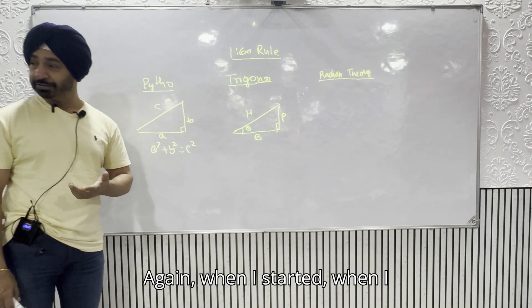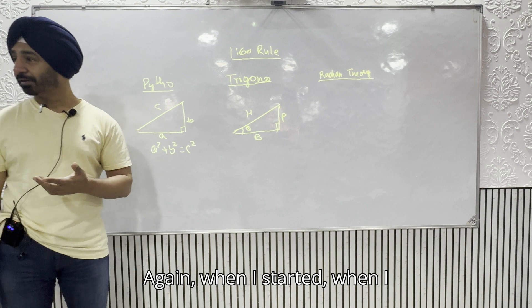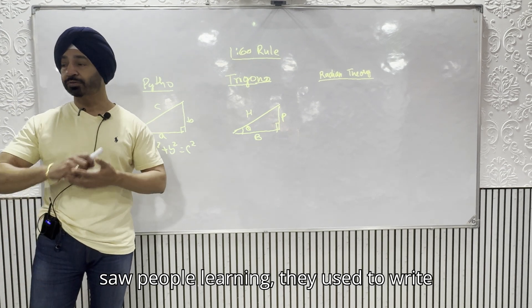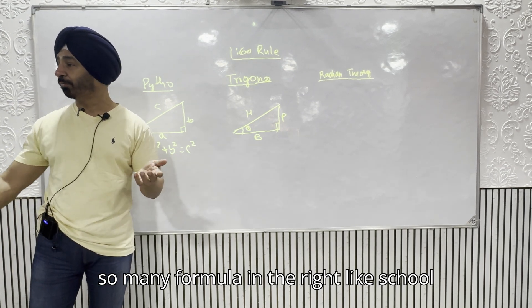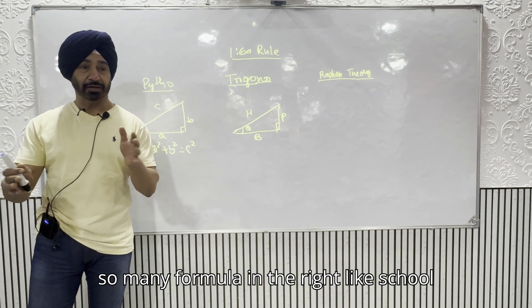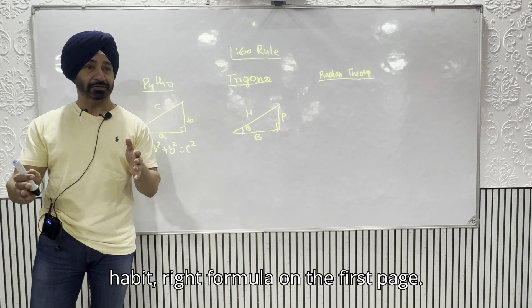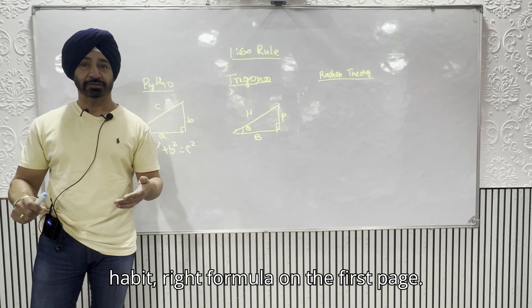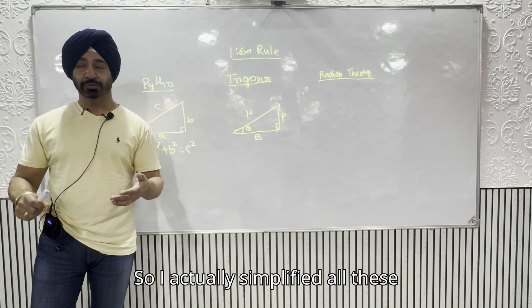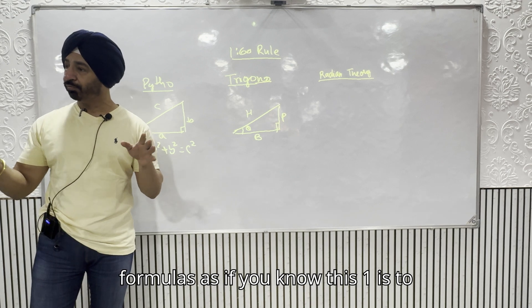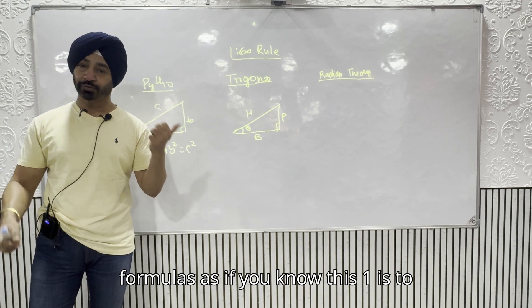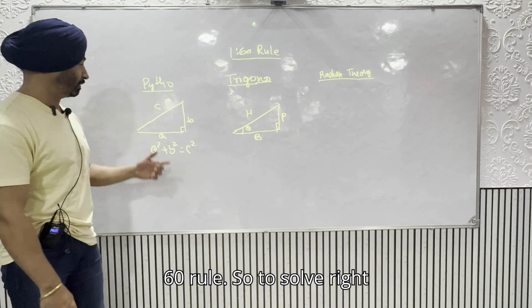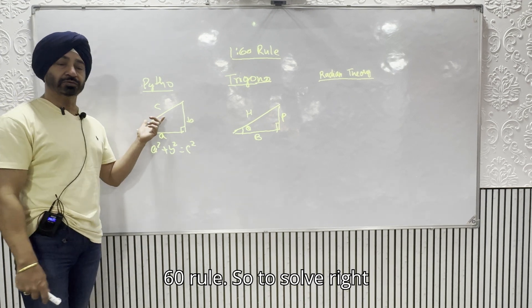When I started and I saw people learning, they used to write so many formulas — like a school habit, writing formulas on the first page. So I actually simplified all these formulas, because if you know the 1-in-60 rule, you can solve everything.